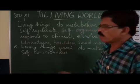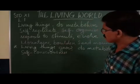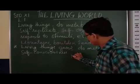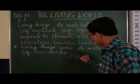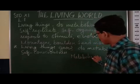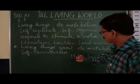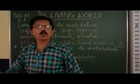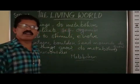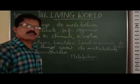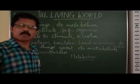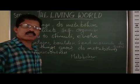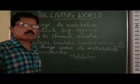So growth is not a defining property of living things. The second characteristic feature is metabolism. Metabolism is the sum total of all chemical reactions taking place in the body of an organism. Every minute and every second, our body performs various types of metabolic reactions. Metabolism can be of two types: anabolism and catabolism.